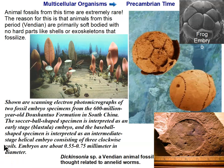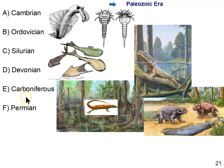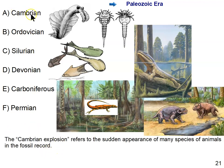This is at the end of the Proterozoic era. The next era is the Paleozoic, which is divided into periods: Cambrian, Ordovician, Silurian, Devonian, Carboniferous, and Permian, in that order. The Cambrian is when we see the appearance of animals — multicellular animals in the fossil record. We call that the Cambrian Explosion, the sudden appearance of animals in the fossil record. Part of the reason is that they had evolved hard parts that fossilized really well.